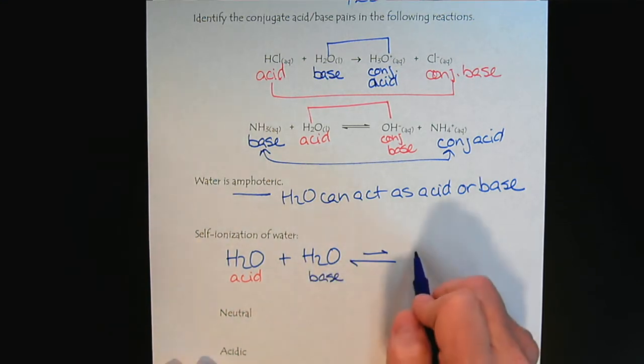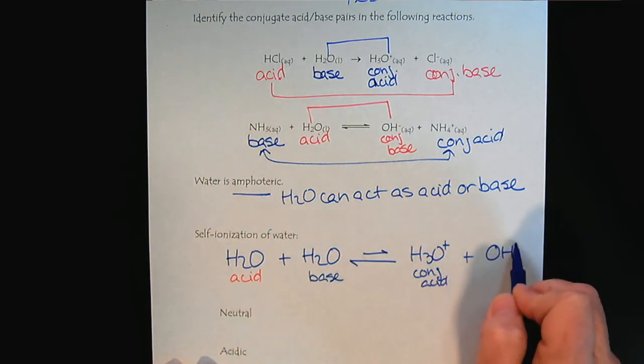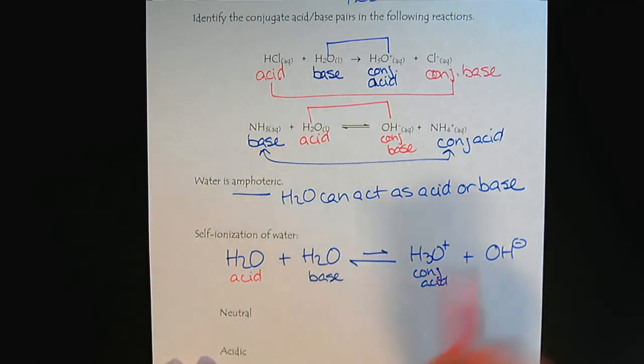And so we would get, the base would accept the proton. And this would be our conjugate acid. And then we would have our hydroxide. Which would be our conjugate base.